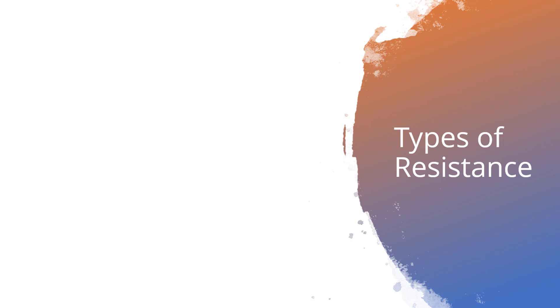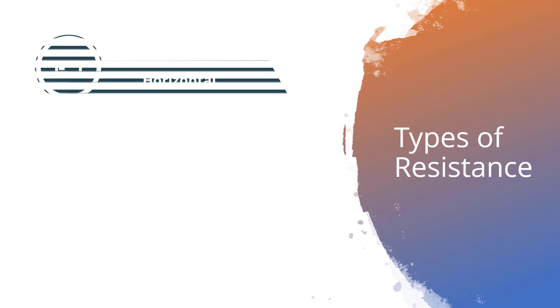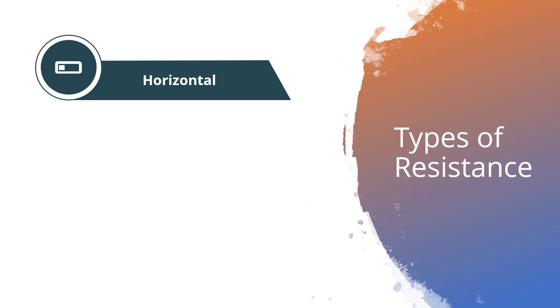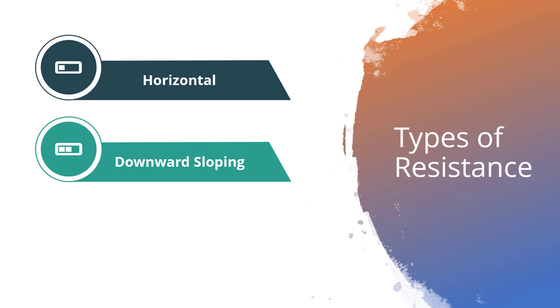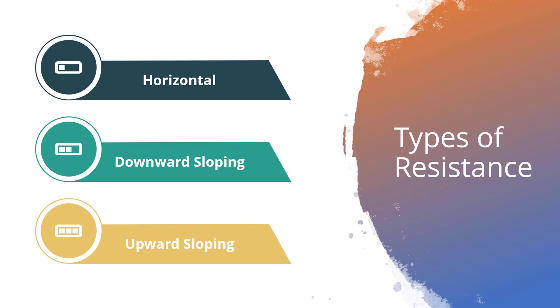Generally, a resistance could take any one of the following three shapes: horizontal, downward sloping to the right, or upward sloping to the right.